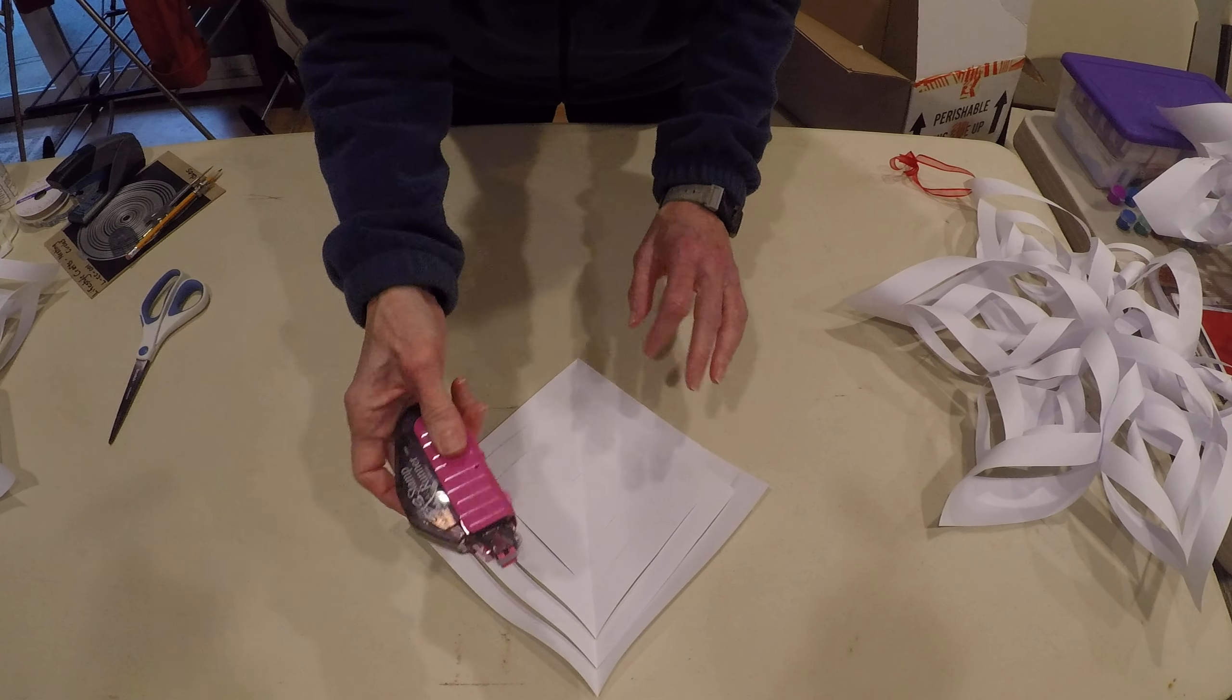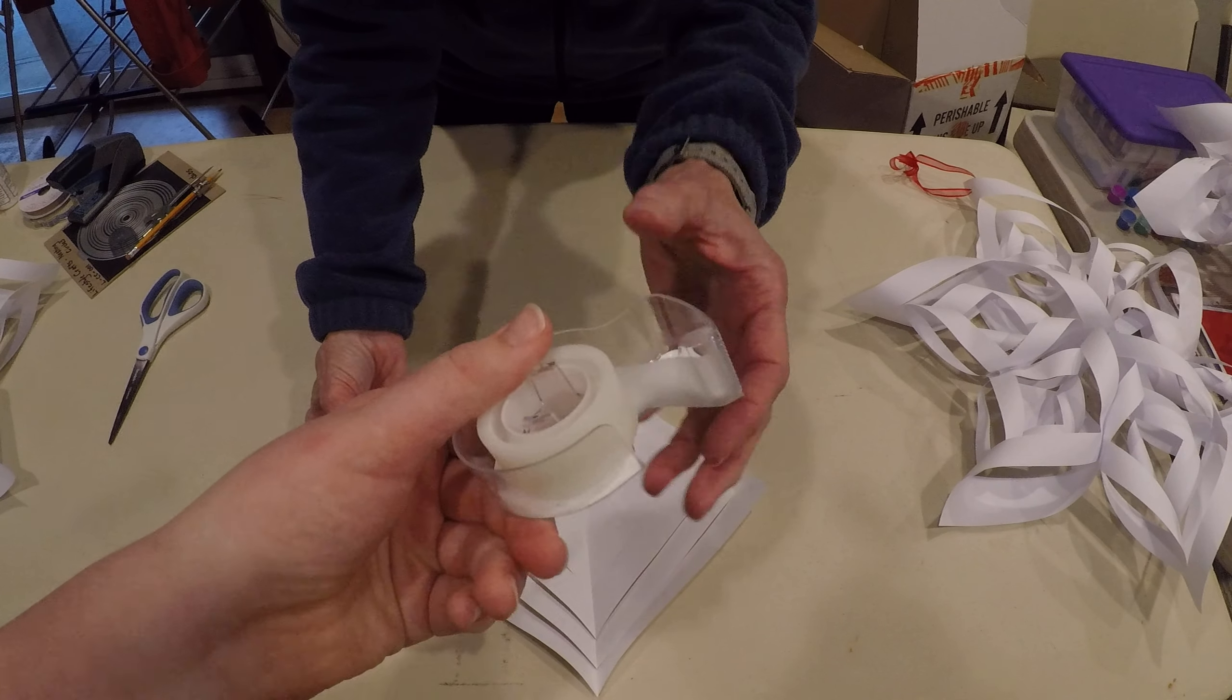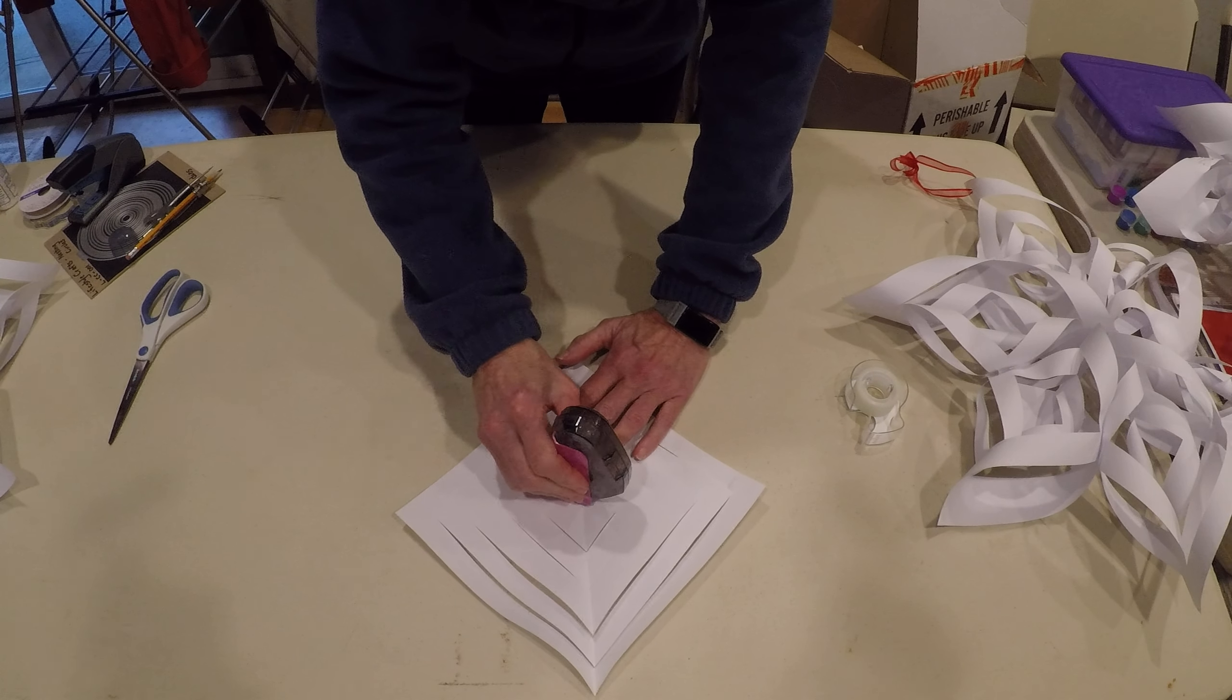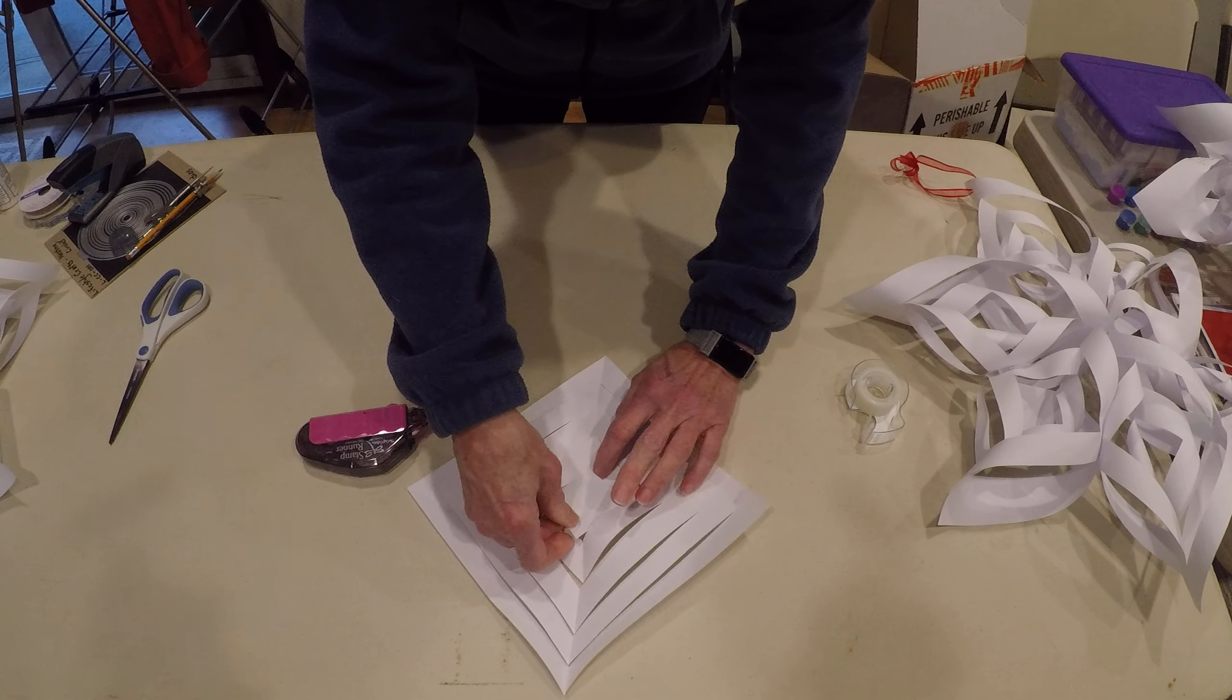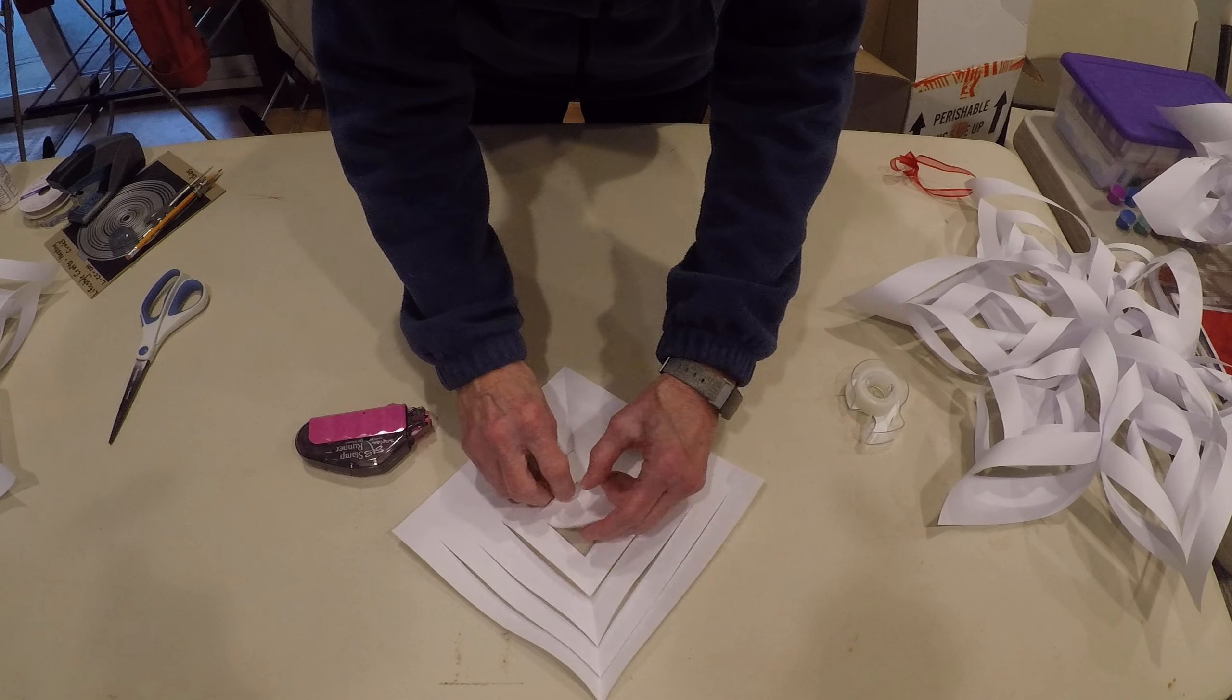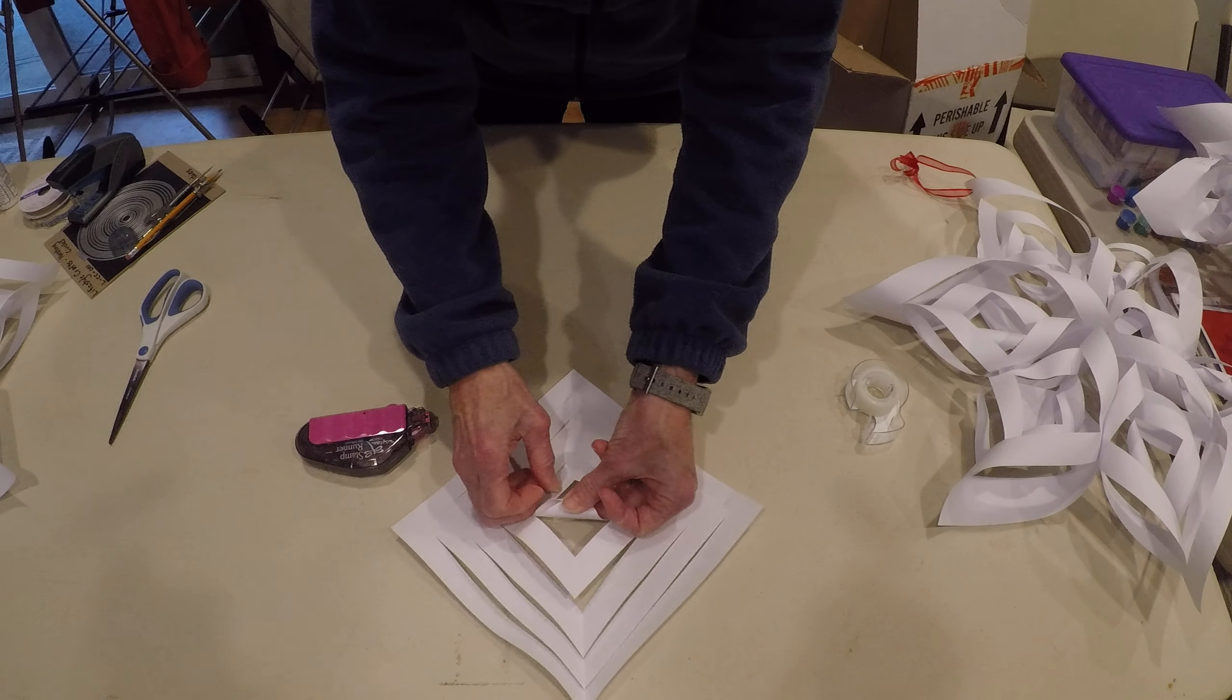Now I have this fun little tape runner that I'm going to use, but you can also use double-sided scotch tape—it doesn't even have to be double-sided. We're just going to put a piece of tape right here and roll it over and tape the two pieces together. So you have this little tube.